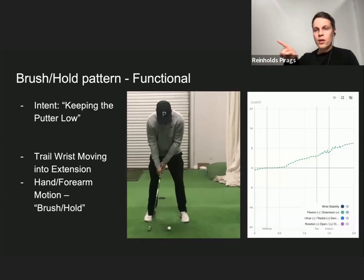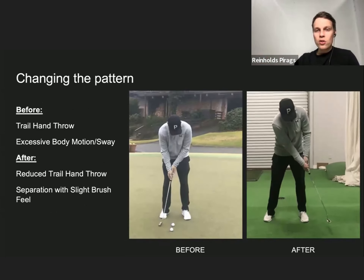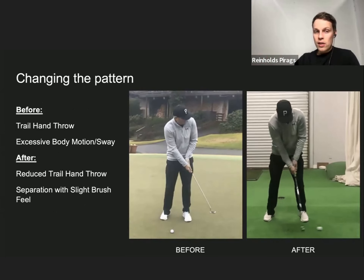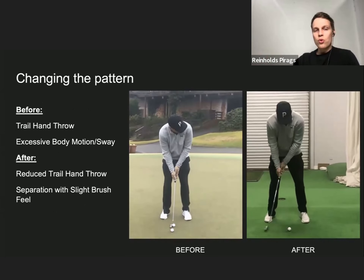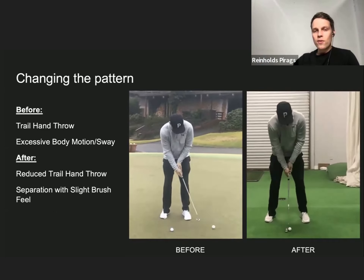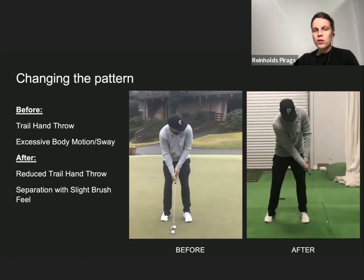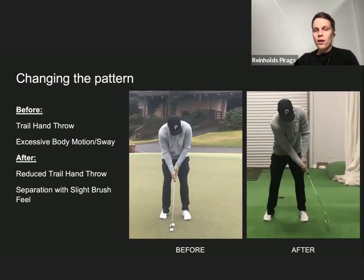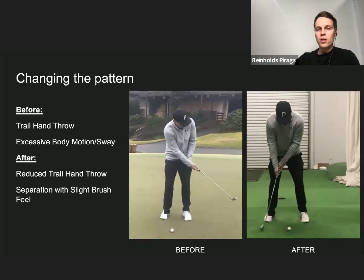Contrasting the two patterns side by side: on the left is the before — trail hand throw with excessive body motion and swaying. On the right, afterwards — reduced trail hand throw with separation and a slight brush feel. As David said, he achieved this change of pattern in approximately one hour, measured with HackMotion. It's an excellent example of transforming a disaster stroke, which is very hard to control, into a functional putting stroke pattern.